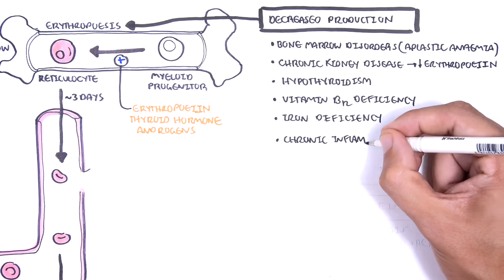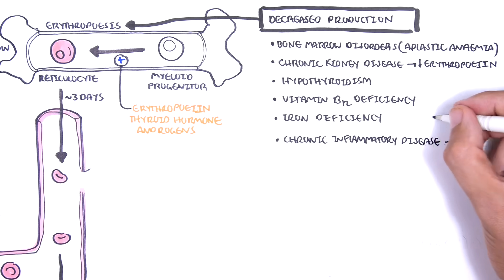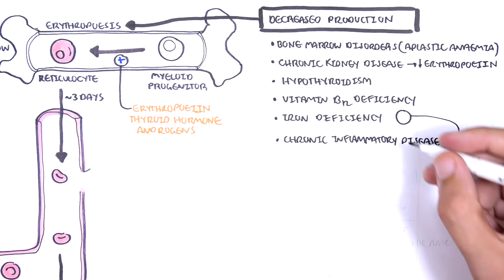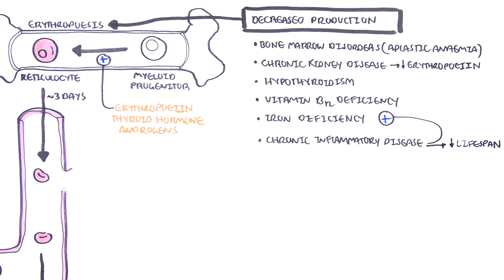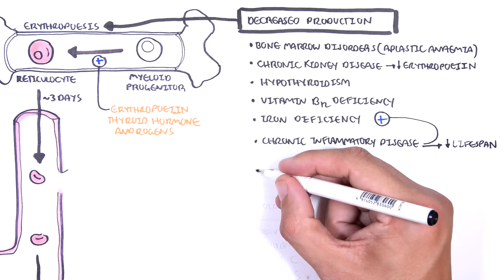Vitamin B12 deficiency and iron deficiency can also lead to anemia because these are the substances needed to produce good functioning red blood cells. Chronic inflammatory disease basically causes a form of iron deficiency, but also is thought to reduce the lifespan of the red blood cell.